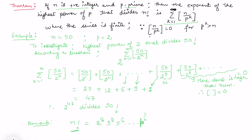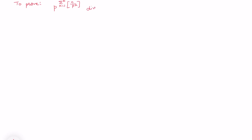Now let's prove this theorem. What we need to prove is that p to the power of the summation from k equals 1 to infinity of the greatest integer of n over p to the power k divides n factorial, where p is a prime and n is a positive integer. The process of proving it is straightforward. The strategy is: find the terms divisible by p and count them, then find the terms divisible by p squared and count those, then p cubed, and so on.